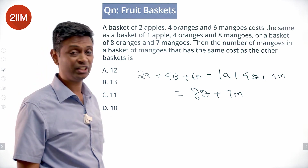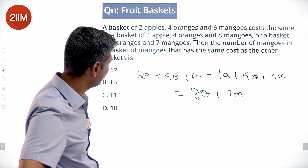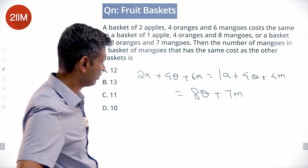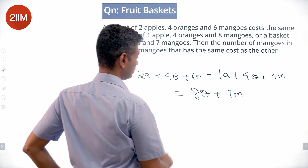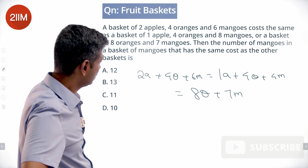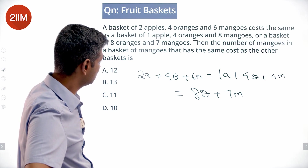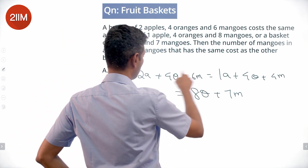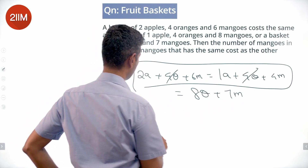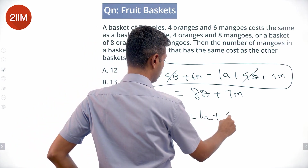To get each variable in terms of the other, let's see which equation works best. There are no apples in the eight oranges and seven mangoes equation, which is helpful. Both of the first two equations have four oranges, so I'll cancel the four oranges and get: 2 apples + 6 mangoes = 1 apple + 4 mangoes.